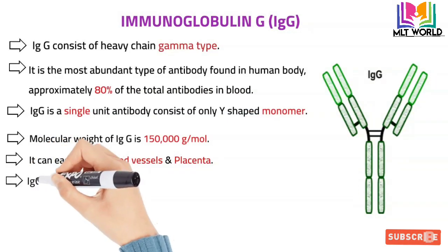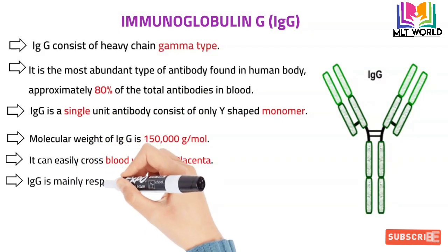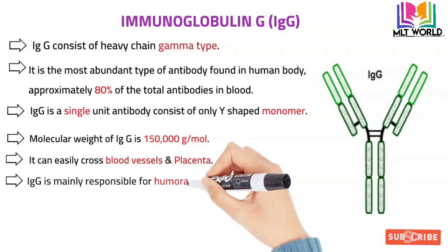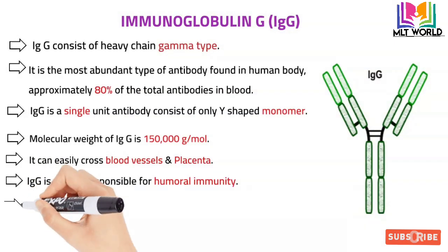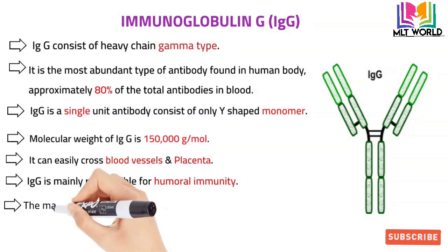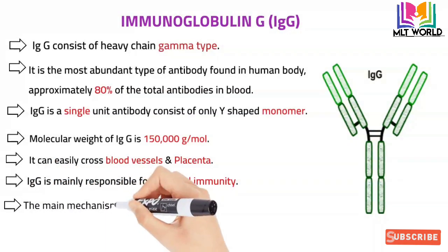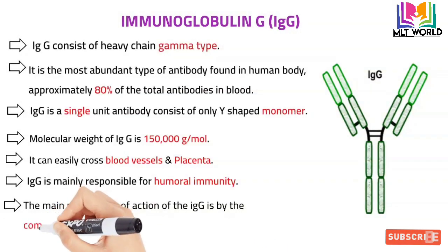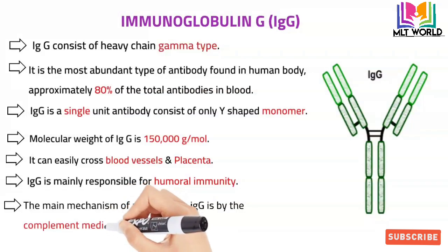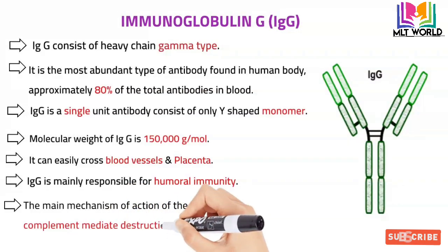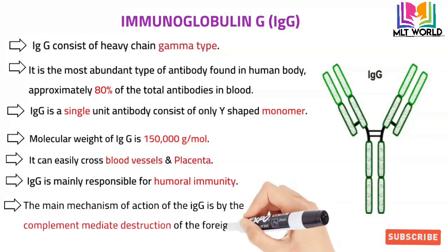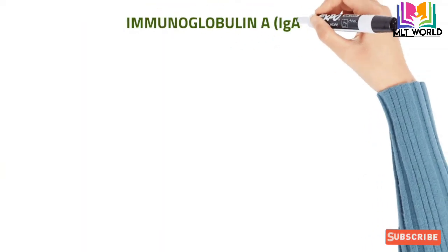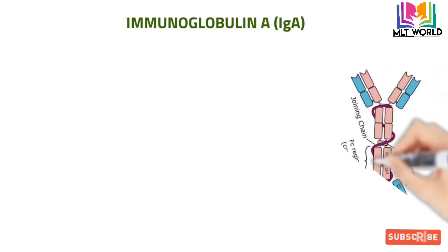Because of its small size, IgG can easily cross blood vessels and the placenta. This is an important MCQ point: the immunoglobulin that can cross the placenta is IgG. IgG is mainly responsible for humoral immunity, and its main mechanism of action is complement-mediated destruction.